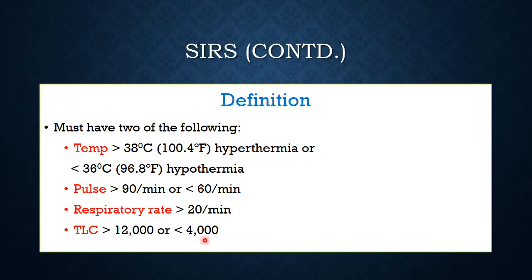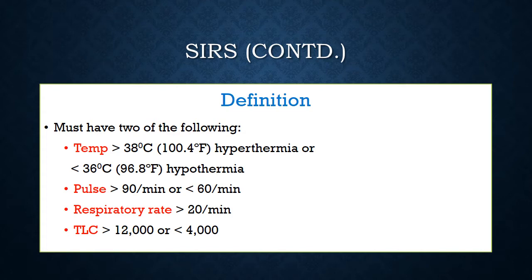The question arises: why hypothermia, bradycardia, and reduced TLC? When the host is so weak, or the illness has made the host so weak that he is unable to generate an inflammatory response, the patient starts developing hypothermia and bradycardia. This is actually a worse state compared to a hyperthermic state, where at least the body has the energy to generate a systemic inflammatory response.